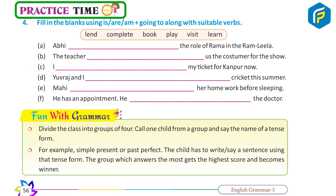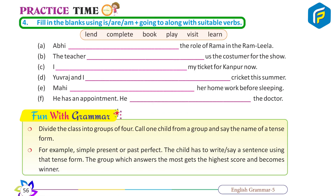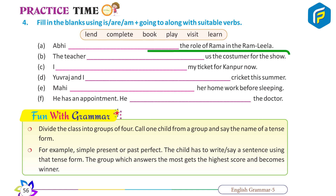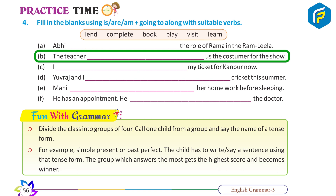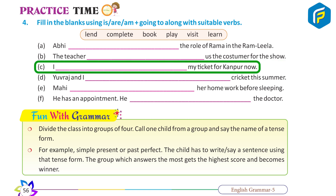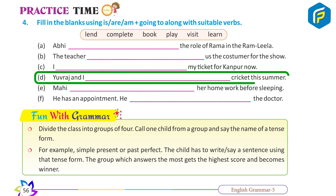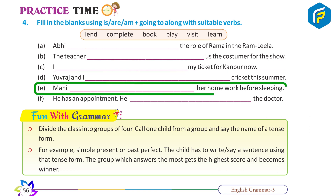Practice Time 4: Fill in the blanks using am/is/are + going to along with suitable verbs. A. Abhi is going to play the role of Rama in the Ram Leela. B. The teacher is going to lend us the book after the show. C. I am going to book my ticket for Kanpur now. D. Yuvraj and I are going to play cricket this summer. E. Mahi is going to complete her homework before sleeping.